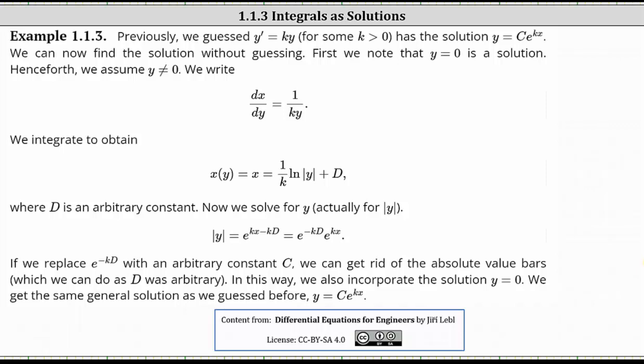In this example, we will solve the differential equation y prime equals ky, where k is some constant greater than zero. Earlier, we guessed the solution y equals c times e to the power of kx. Now we can find the solution without guessing. First, note that y equals zero is a solution to the differential equation, and therefore we'll assume y doesn't equal zero.